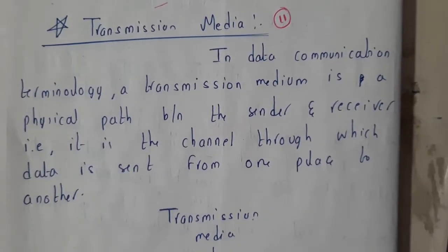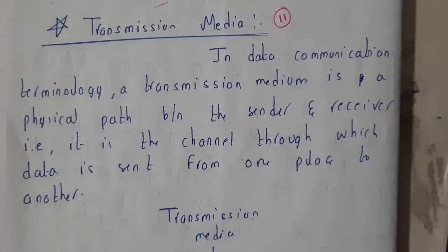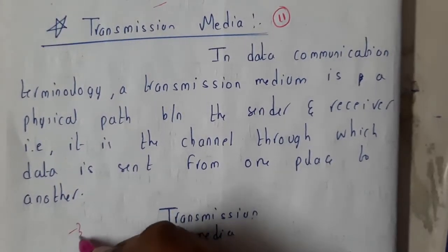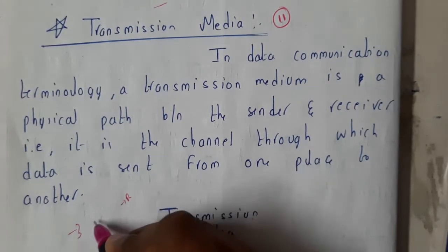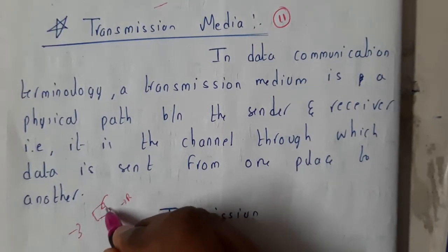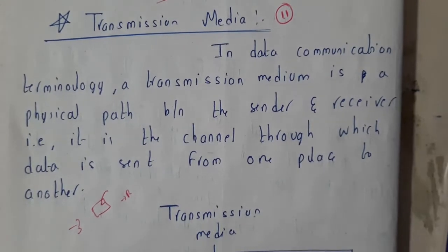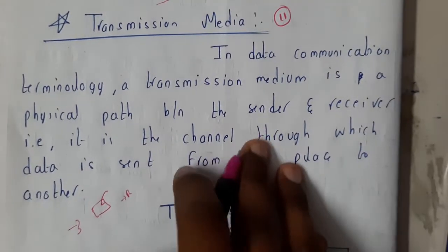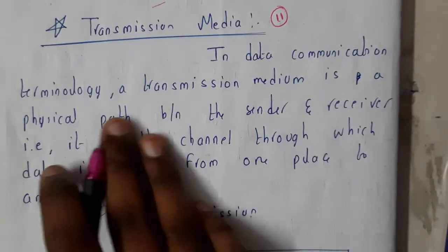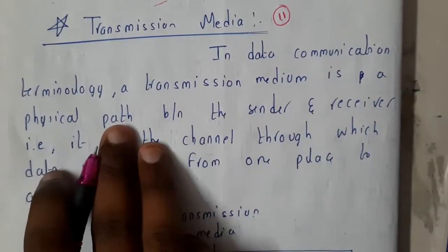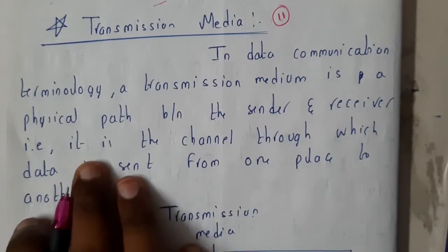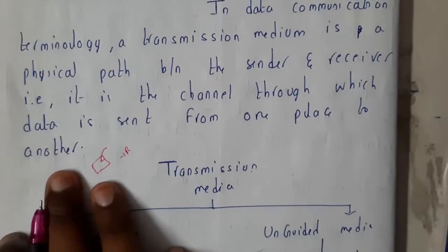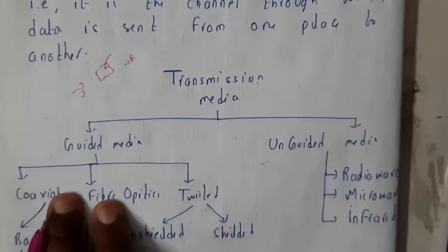Welcome back. In this tutorial, let us go through transmission media. Transmission media is basically what lies between the sender and receiver — the data travels through it. We can say it is a physical connection or a wireless connection. In data communication terminology, a transmission media is a physical path between the sender and receiver; it is the channel through which the data is sent from one place to another.